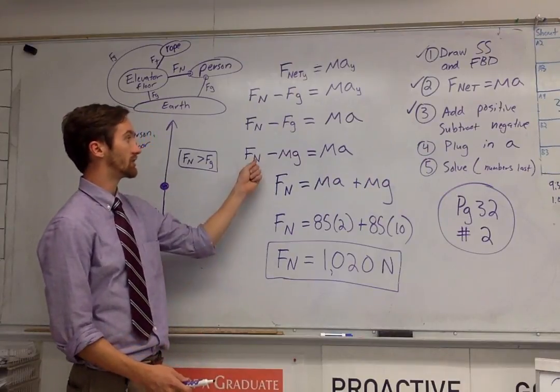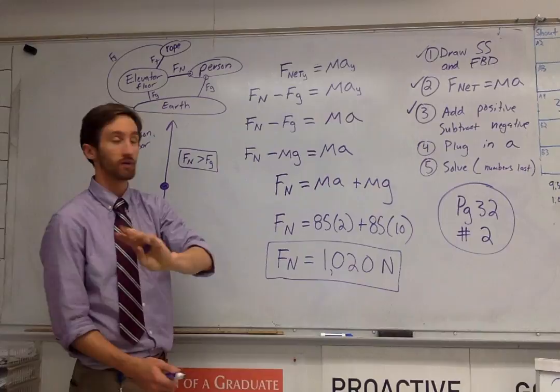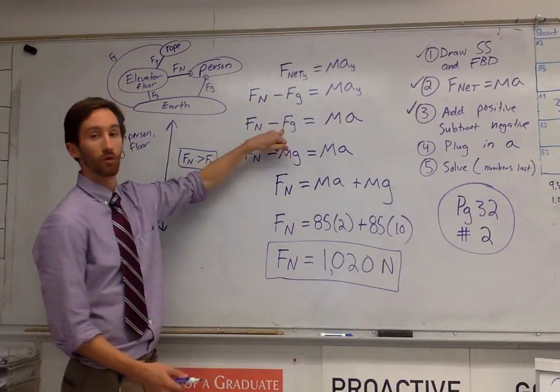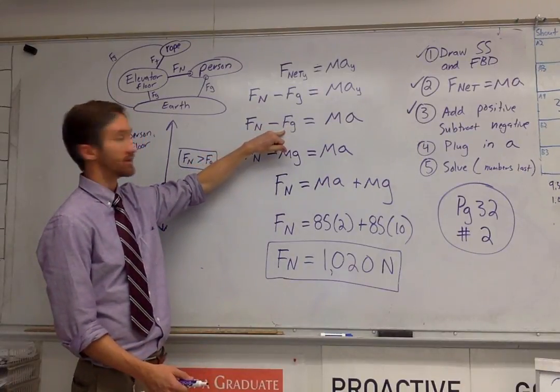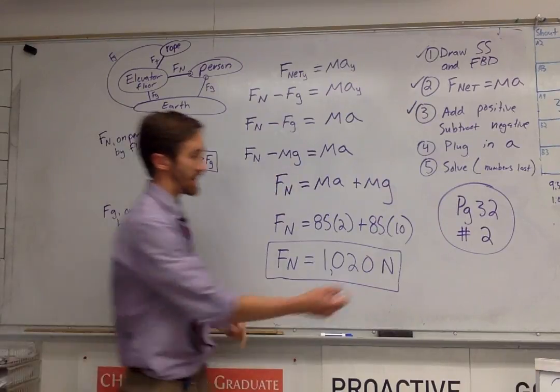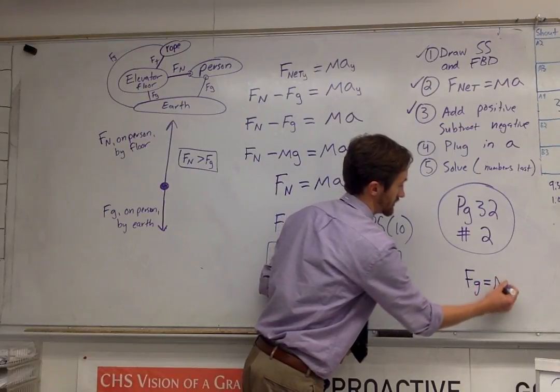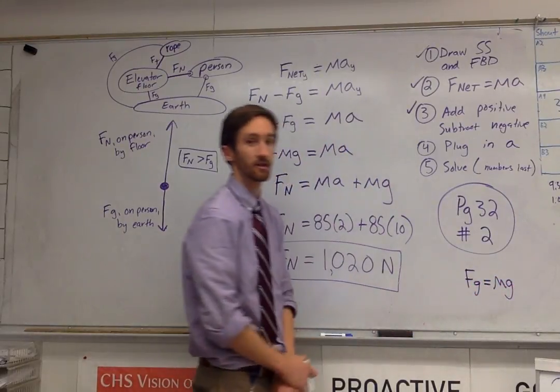We can then try and solve for normal force. Oops, sorry, got one step ahead of myself. Our weight, our Fg, needs to get substituted in for mg. Because remember our equation, Fg equals mass times little g.